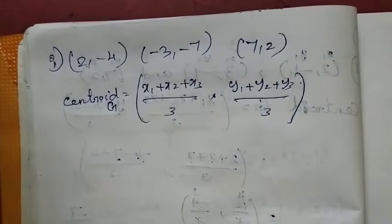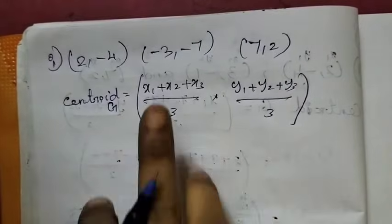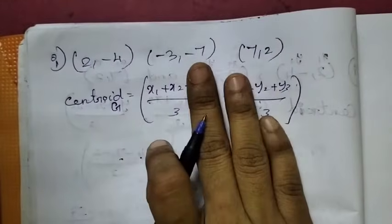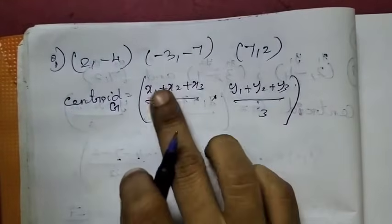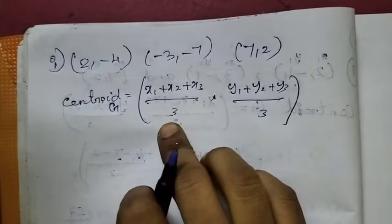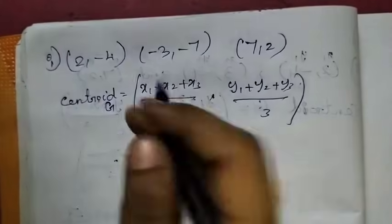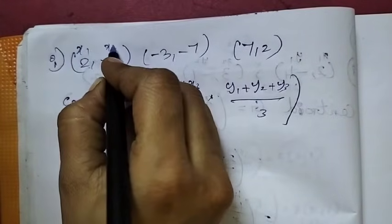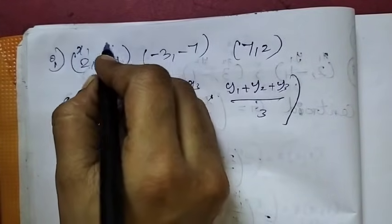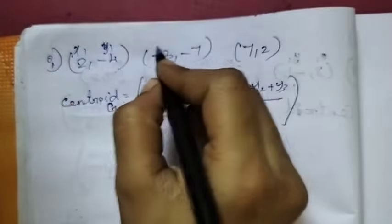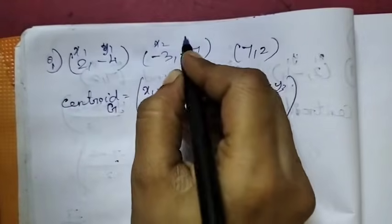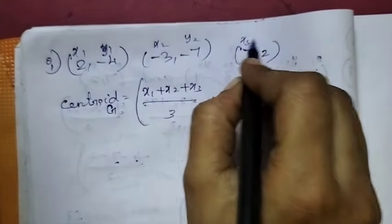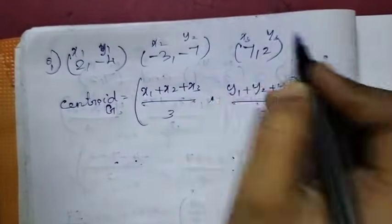That's a midpoint formula — midpoint uses 2 points. If you have 3 points, we will find out the centroid. So we label the coordinates as x1, y1; x2, y2; x3, y3.